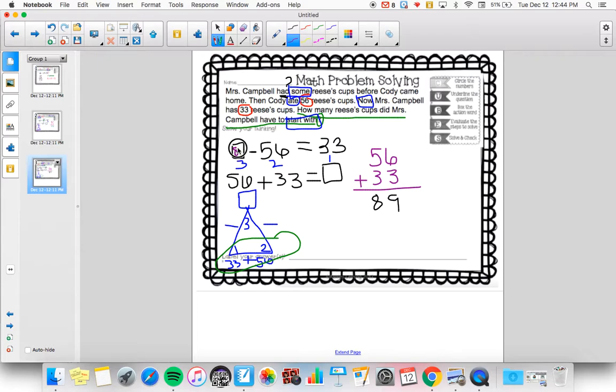Now I'll ask them to go back and put it in here. Put that 89 in the box and see if it makes sense because the last part is solve and check. So we've solved. Now we need to check. 89 minus 56 equals 33. Does that make sense? In fact, that does make sense. They can even go as far as doing 89 minus 56 or 89 minus 33 and see if they get the other answer.